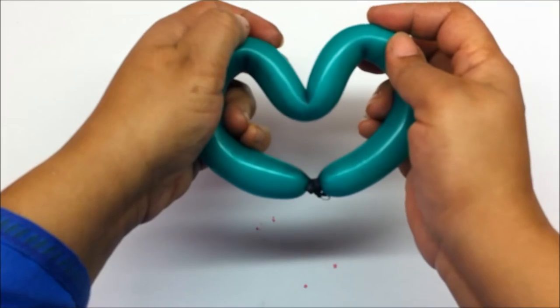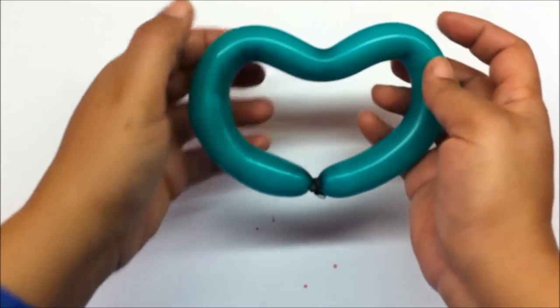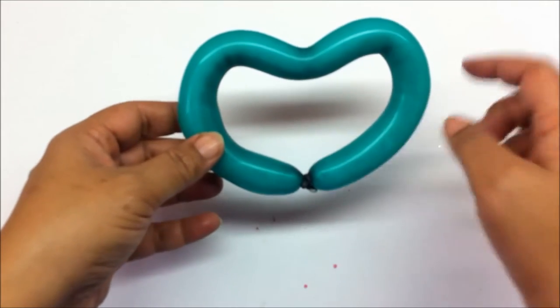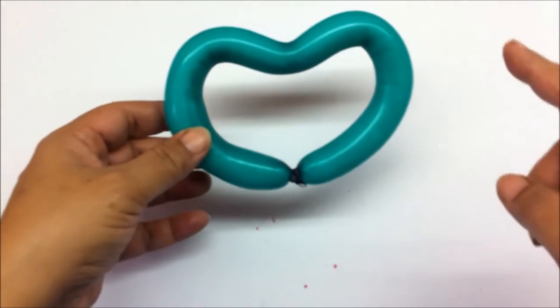Now when you slowly let go, open it out, it will retain its shape. So this is the heart shape that you get. You can make it of a bigger balloon if you want to get a bigger heart shape.